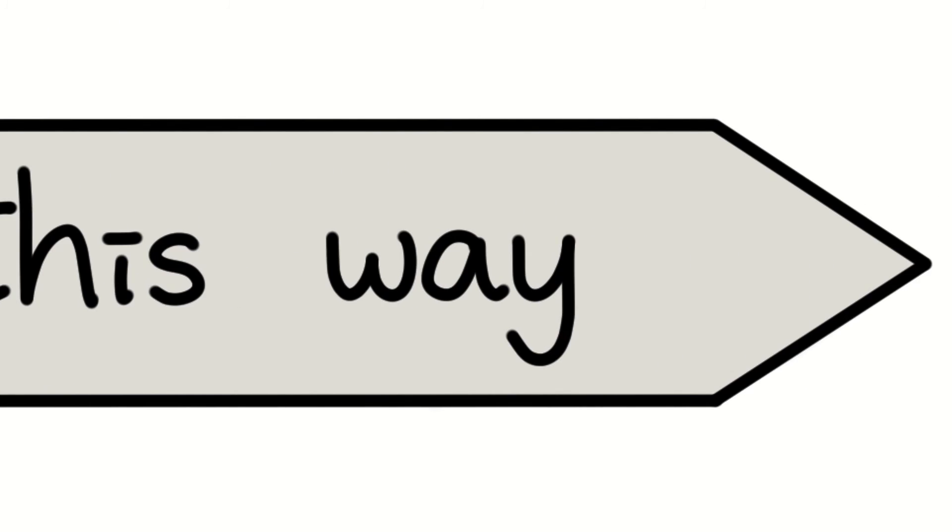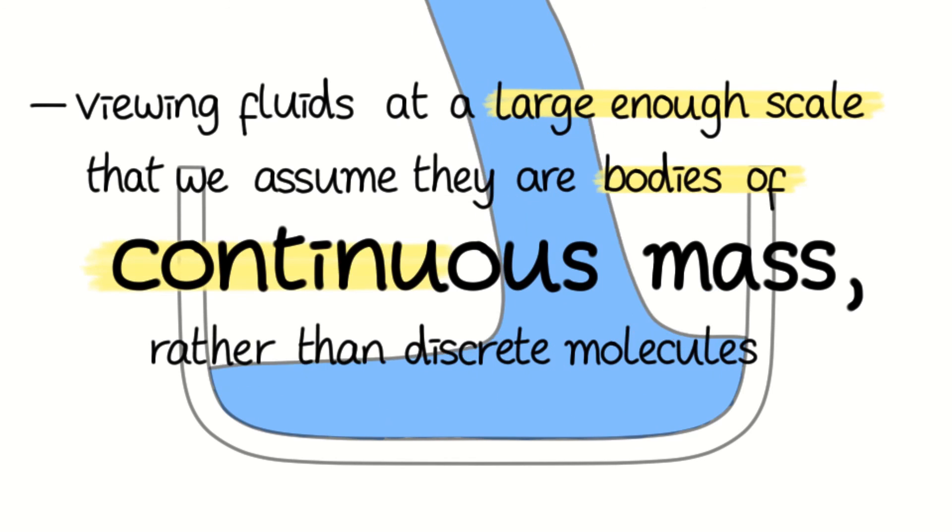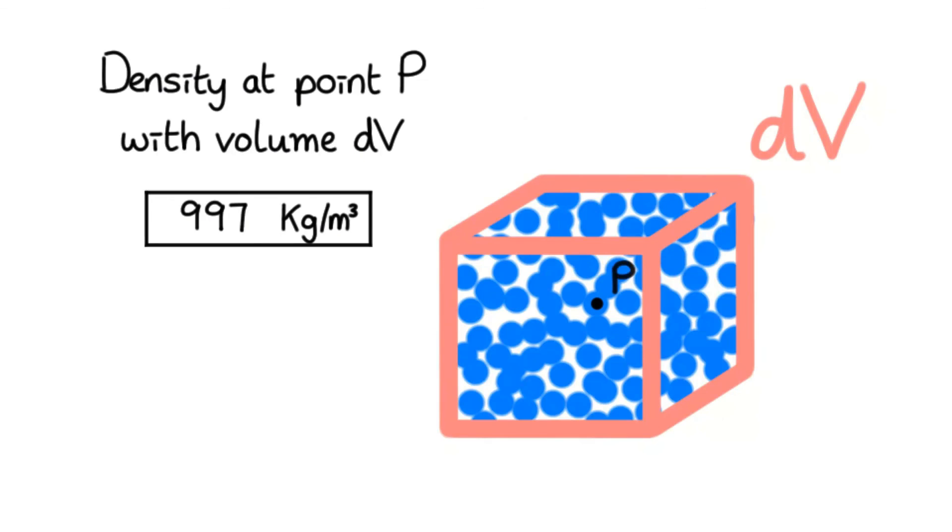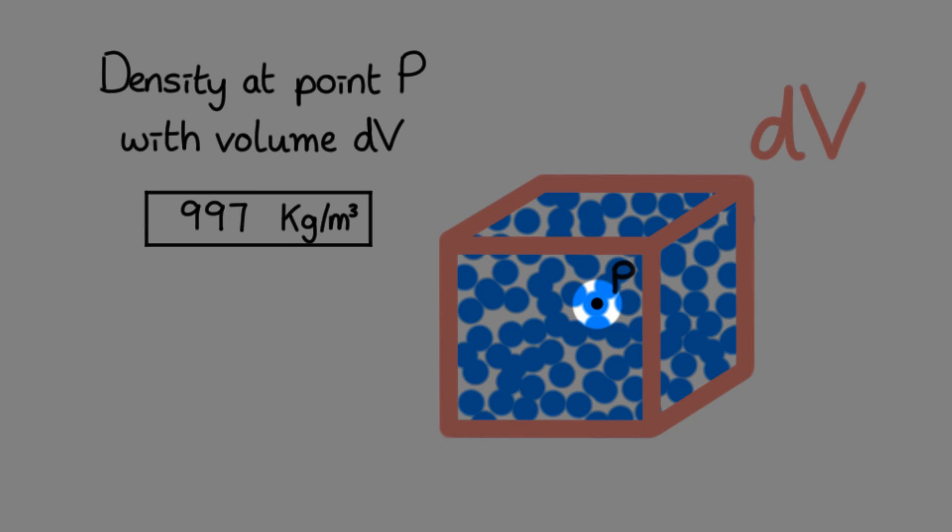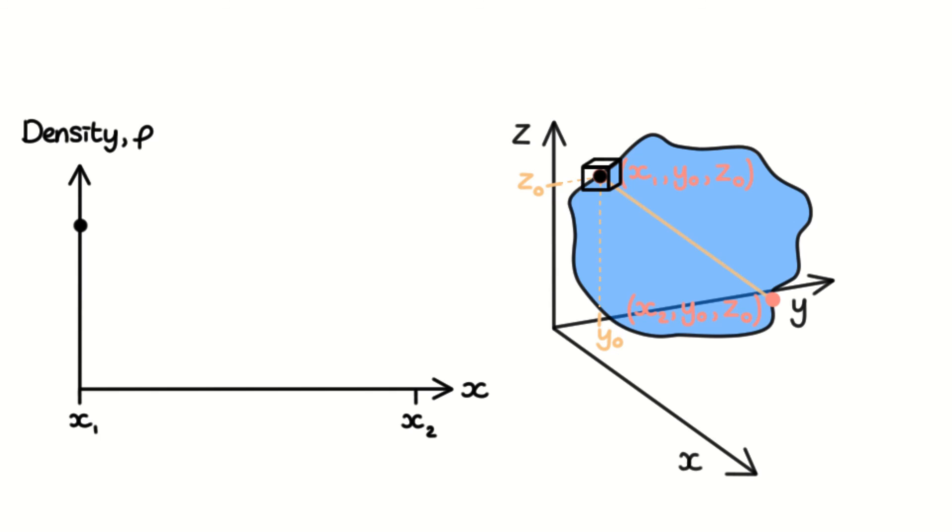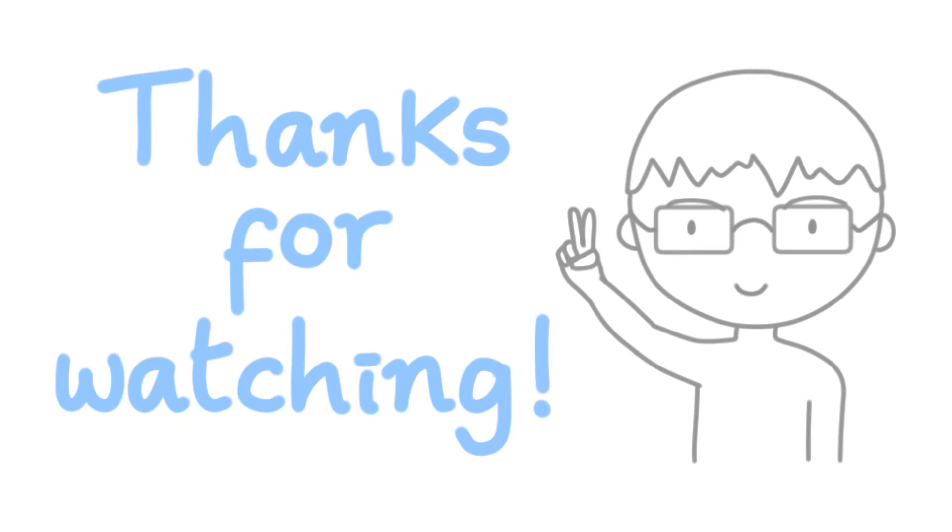This way, we can assume fluids are bodies of continuous mass rather than viewing them as a load of molecules as we don't need to care about the movement of individual molecules. At this scale, we monitor the overall motion and changes of the fluid as if it's a continuous mass.